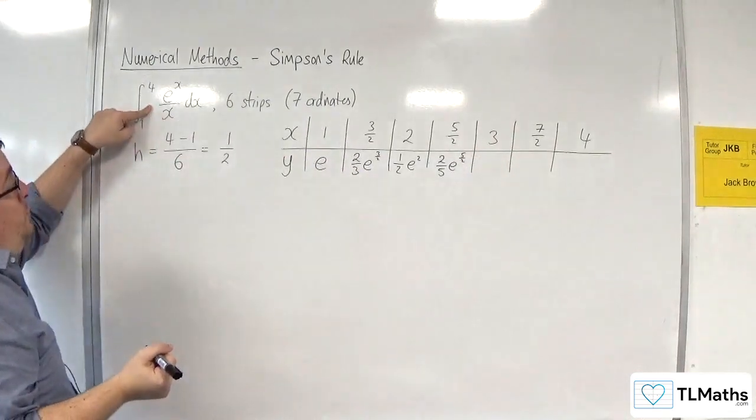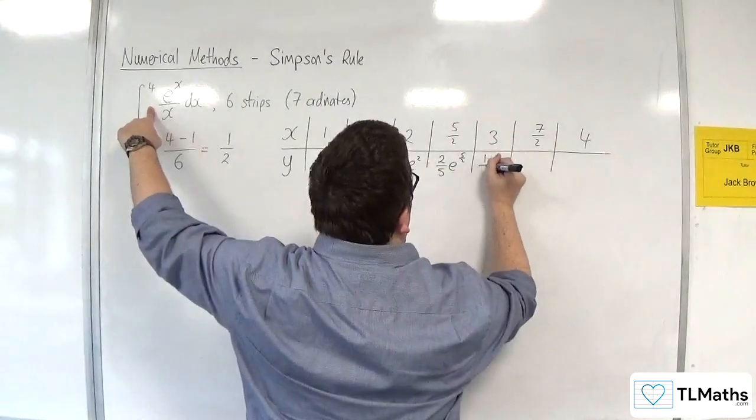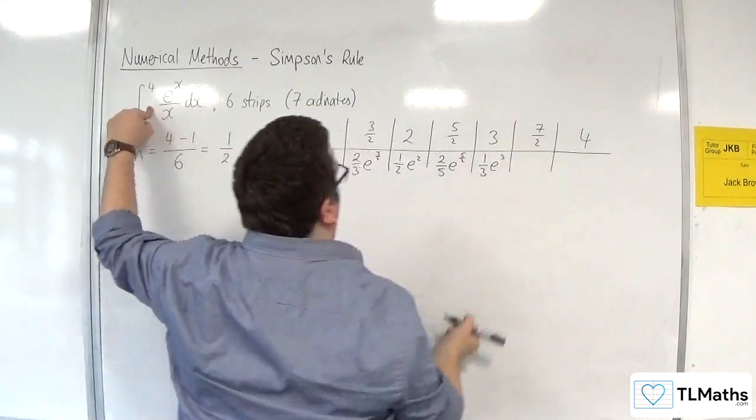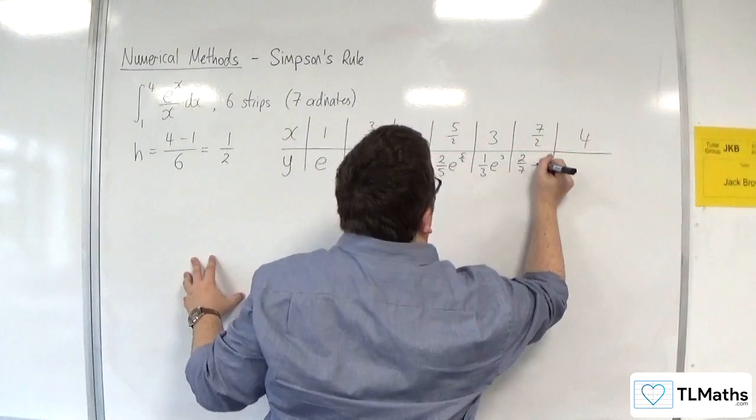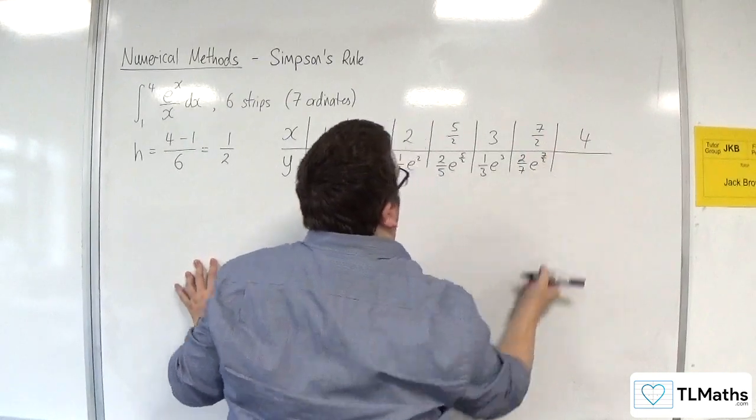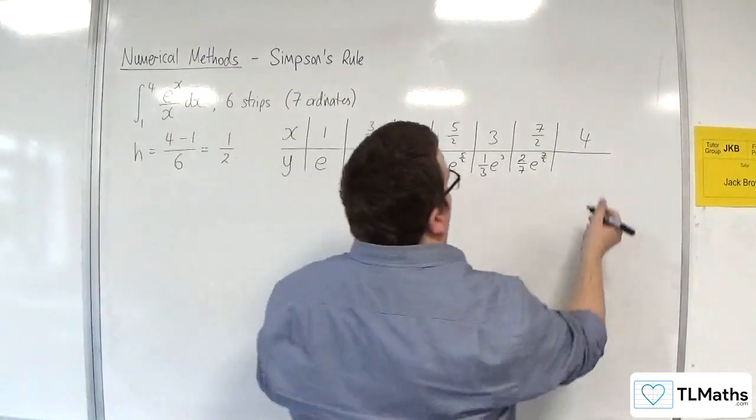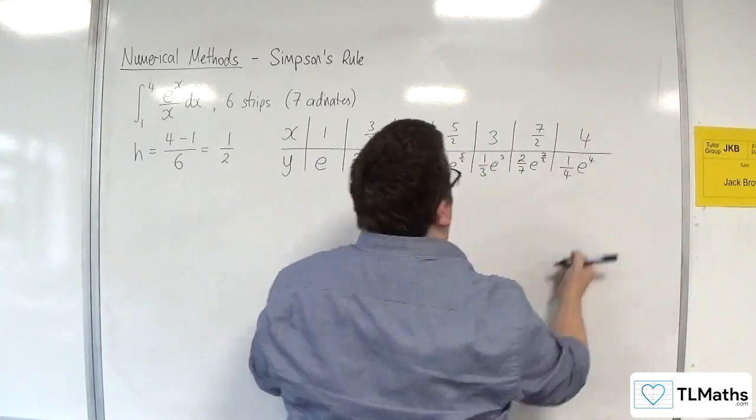Substitute in 3, we're going to get 1 third e cubed. Substitute in 7 halves, 2 sevenths e to the 7 halves. Then substitute in 4, 1 quarter e to the 4.